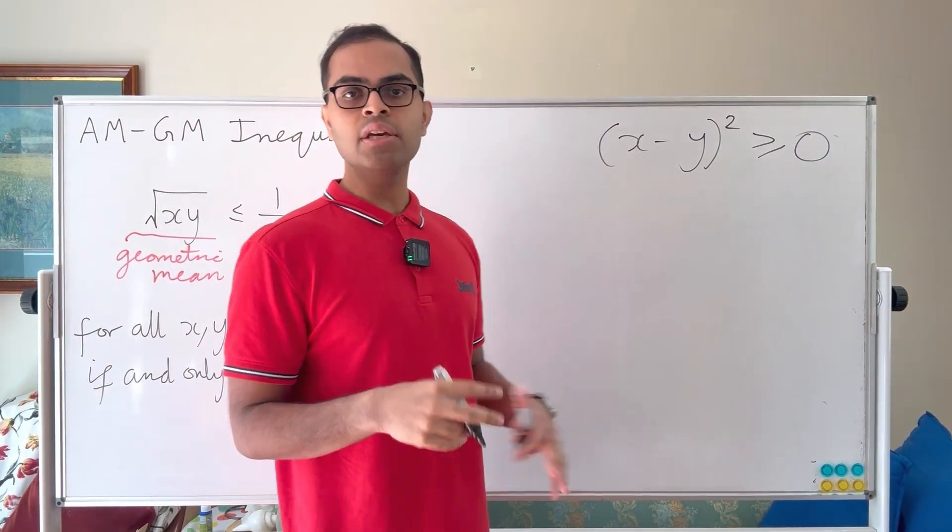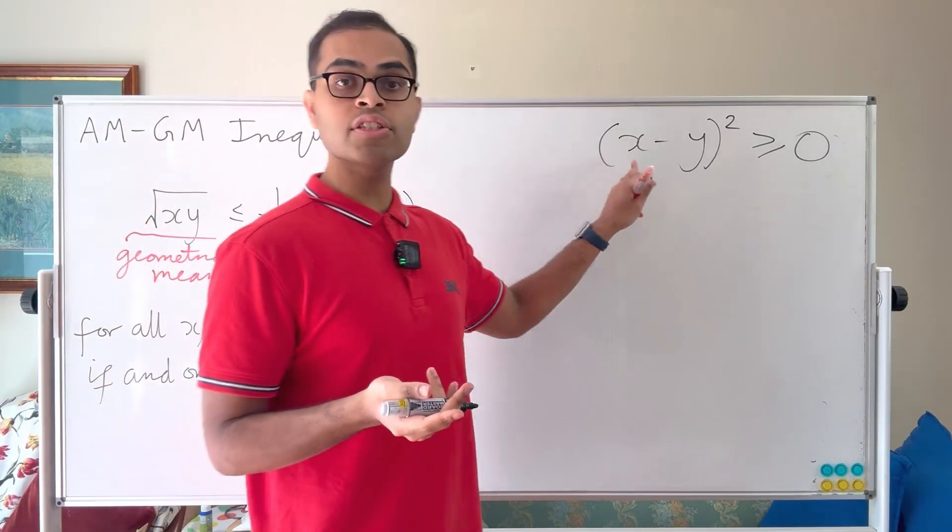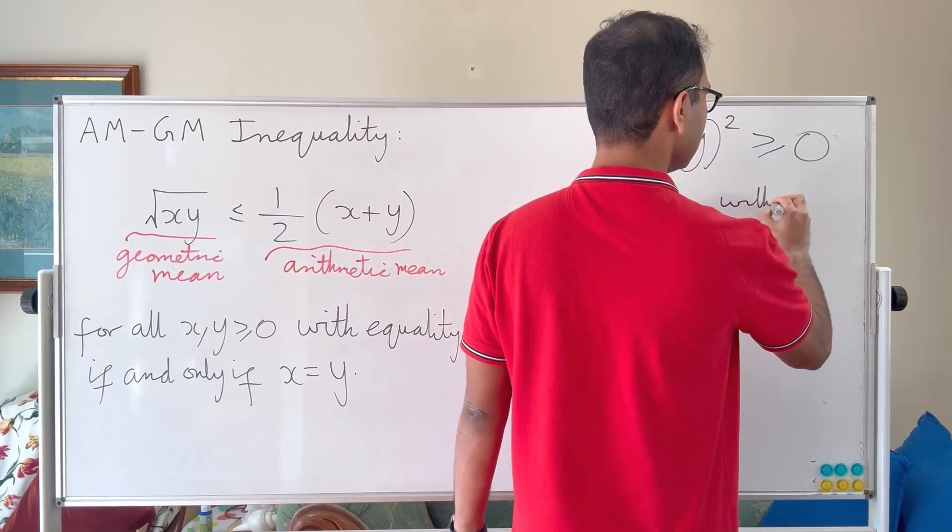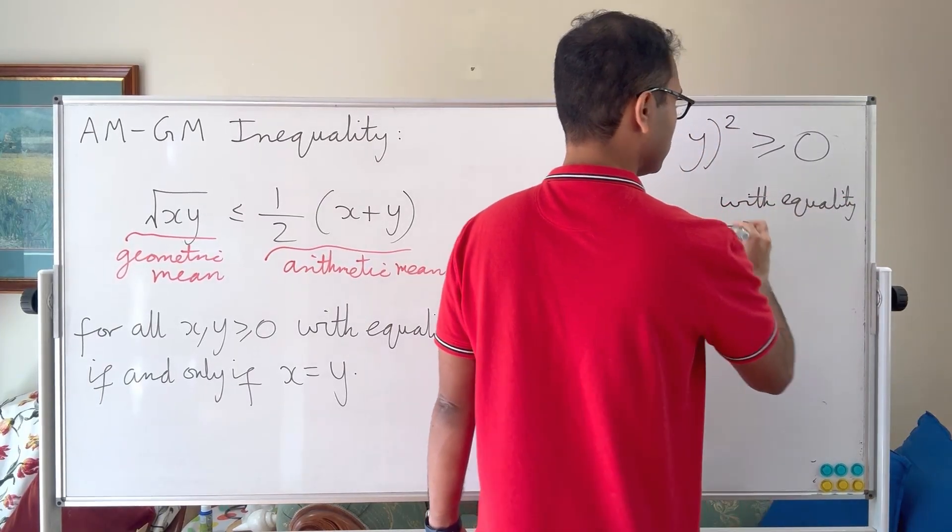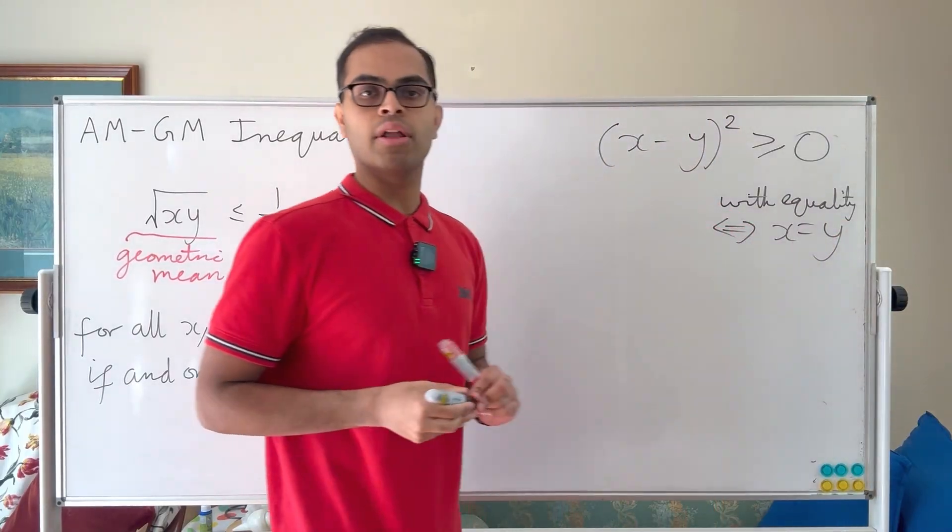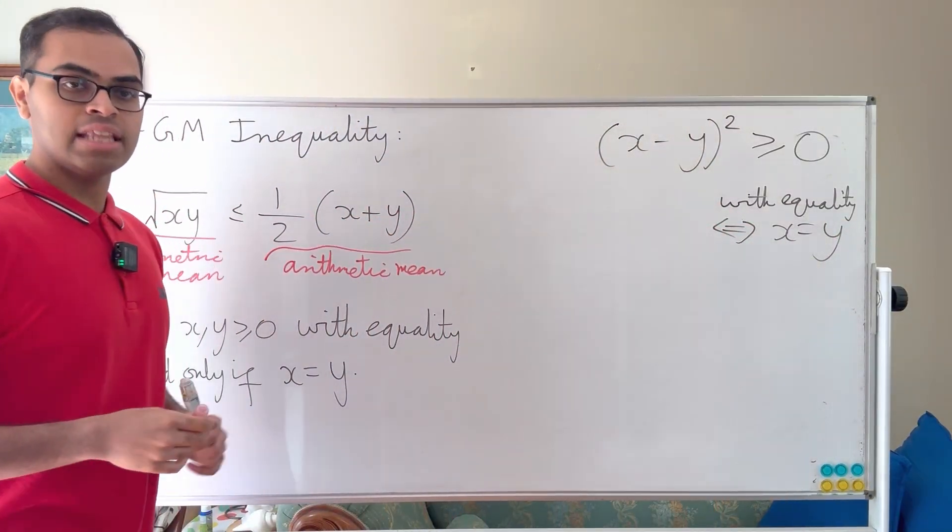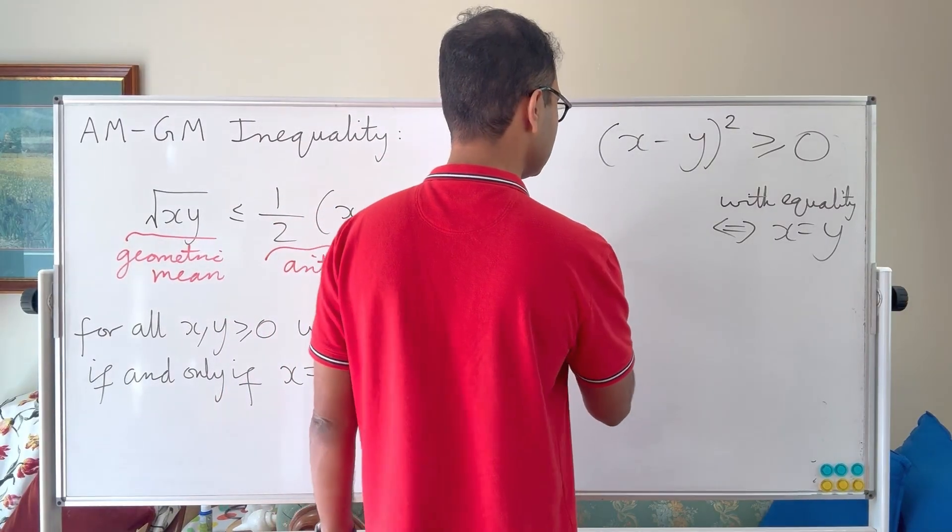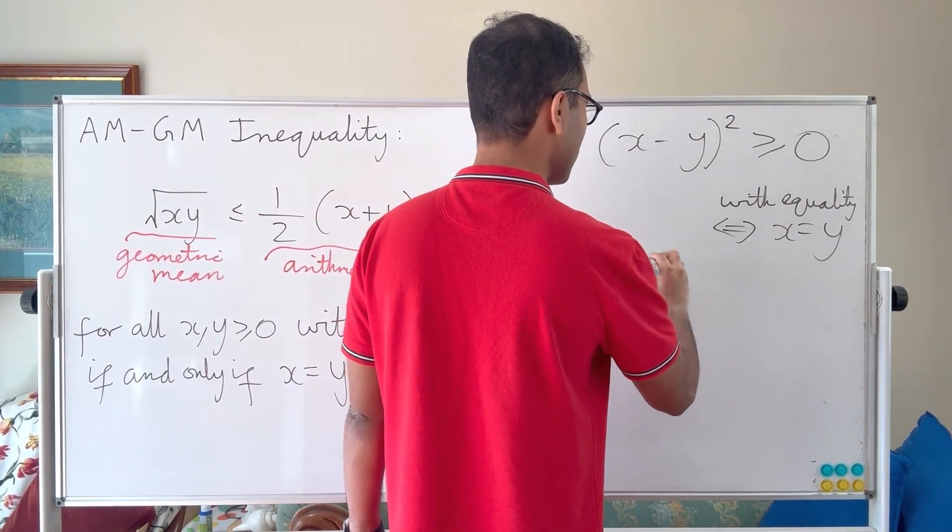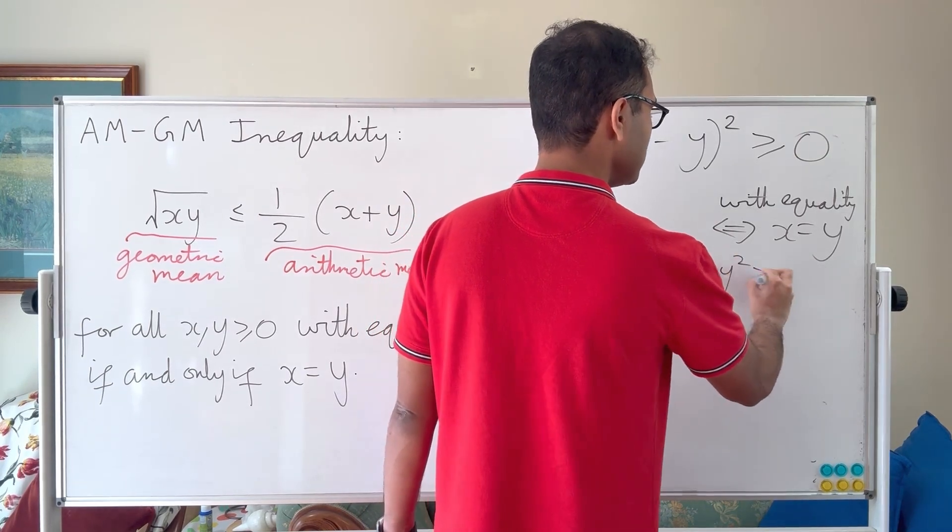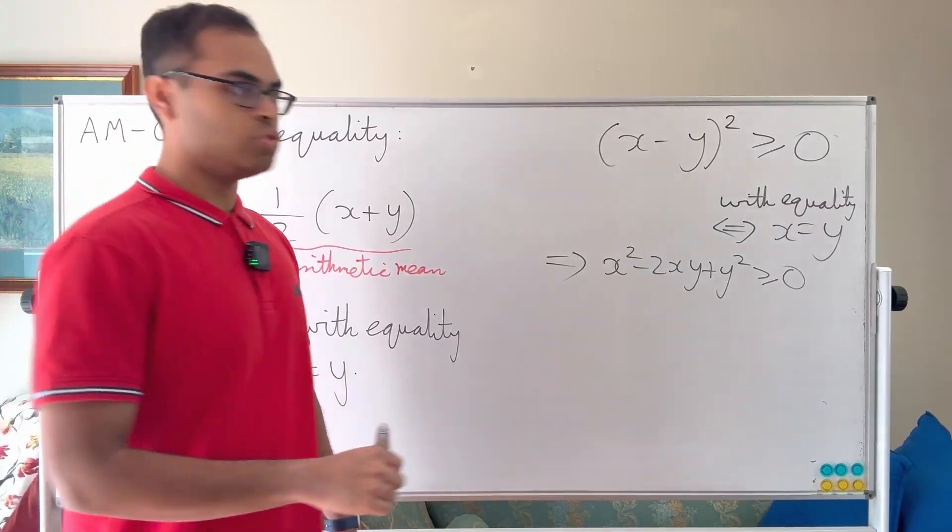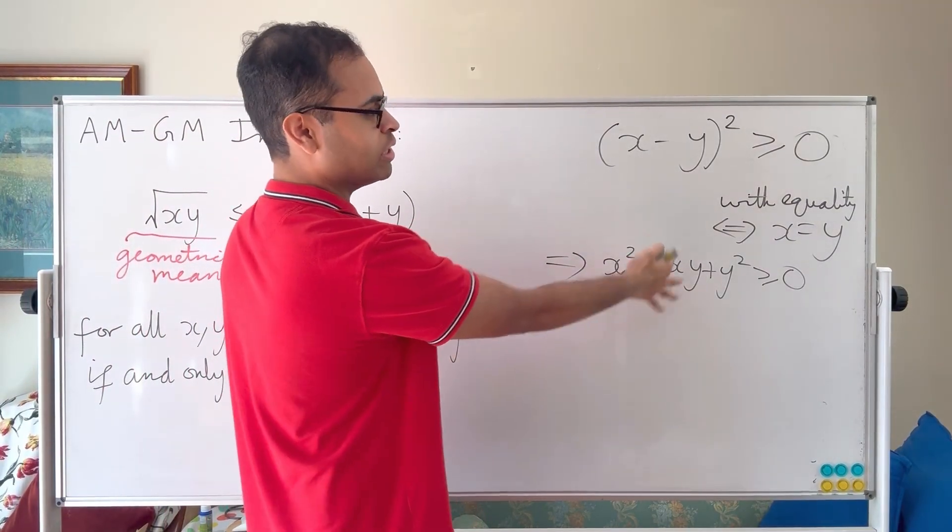This is a fundamental inequality we know is true because perfect squares are always non-negative, and equality holds if and only if x equals y. So we have this inequality. Now this is going to lead us to the AM-GM inequality because we use the binomial theorem: x minus y squared equals x squared minus 2xy plus y squared, which is at least zero, again with equality precisely when x equals y.